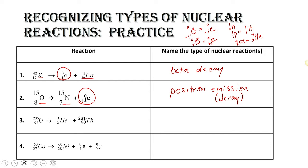Let's take a look at number three. We've got uranium-235 that is being converted to thorium-231, and we also have here a helium. Remember, we said that helium is an alpha particle. So, the helium atom is found on the product side, and we know that we have alpha decay.